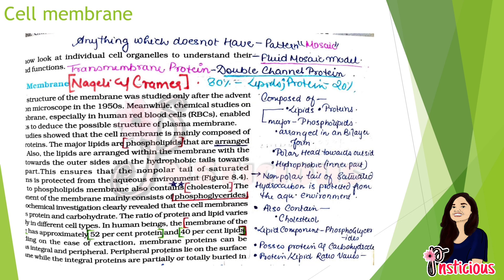Anything which does not have a fixed pattern is known as a mosaic model. Our cell membrane is therefore called the fluid mosaic model. There is a transmembrane protein which is a double channel protein. In the beginning, the cell membrane was described by Nageli and Cramer — this is not mentioned in NCERT. The fluid mosaic model was given by Singer and Nicholson.